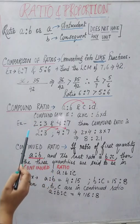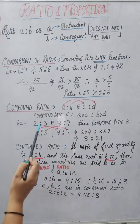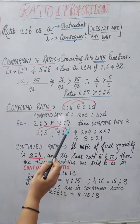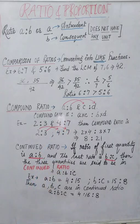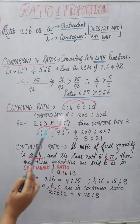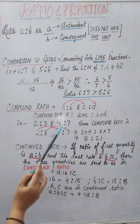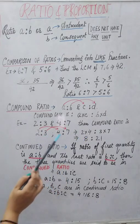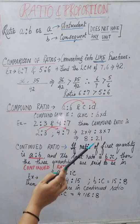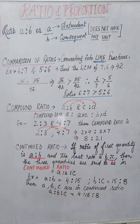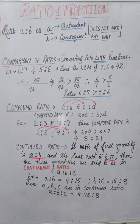For example, with 2:3 and 4:7, to convert to compound ratio we multiply 2×4 and 3×7, giving us 8:21. This is how we convert ratios into compound ratio.